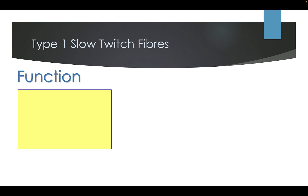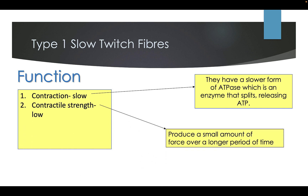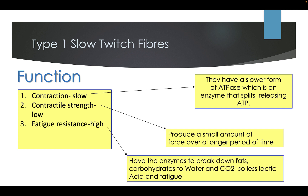The function of Type 1 fibres: they contract slowly and have a slower form of ATPase, the enzyme that splits ATP. Their contractile strength is quite low, producing a small amount of force over a long period of time, and they are fatigue resistant — having enzymes to break down fat and carbohydrates to water and CO2, resulting in less lactic acid. Their aerobic capacity is high but anaerobic capacity is quite low, so they work well with oxygen but not without it.